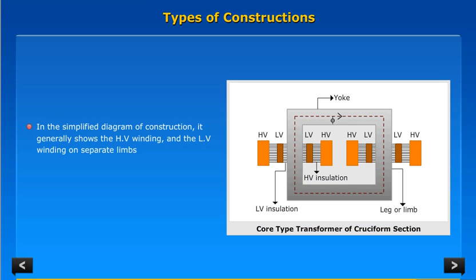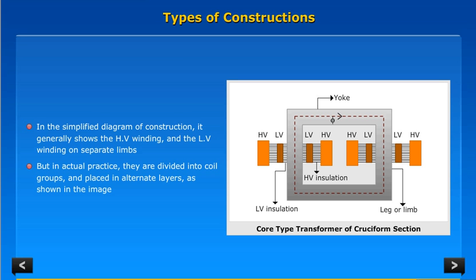In the simplified diagram of construction, it generally shows the HV winding and the LV winding on separate limbs. But in actual practice, they are divided into coil groups and placed in alternate layers as shown in the image.